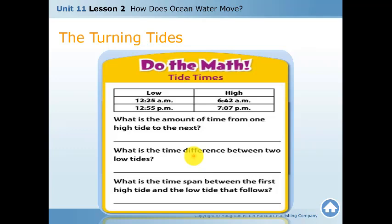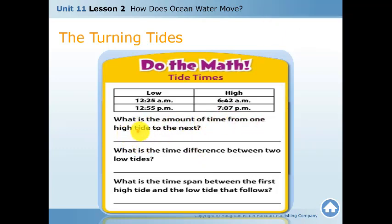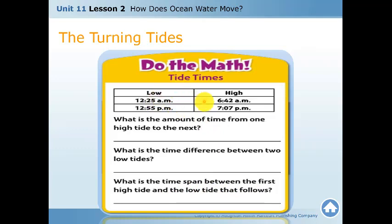Complete page 511 by yourself. Look at the tide chart and answer: what is the amount of time from one high tide to the next? What is the difference between two low tides — subtract the low tide times. What is the time span between a high tide and the low tide that follows?